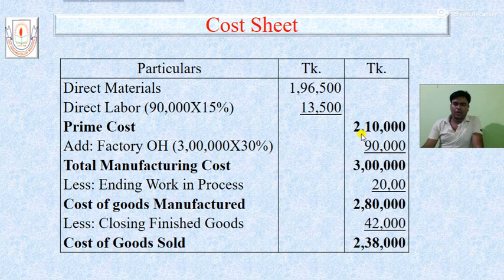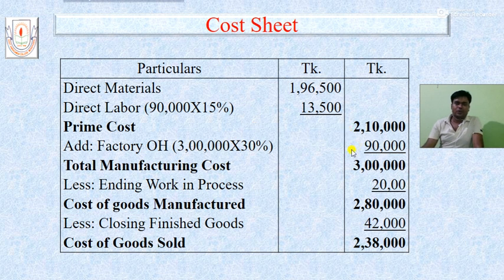Direct labor is 15% of factory overhead. Factory overhead is 90,000 taka, so direct labor = 15% of 90,000 = 13,500 taka. Now prime cost minus direct labor gives us direct materials. So direct materials = 2,10,000 minus 13,500 = 1,96,500 taka. Our total manufacturing cost is composed of: factory overhead, direct labor, and direct materials.